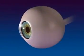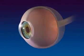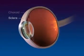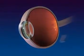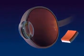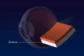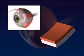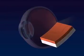The eye has three layers: the sclera, choroid, and retina. The sclera is the outer white layer that maintains the shape of the eye. Muscles attached to the sclera control eye movements. Choroid is the middle layer that contains the blood vessels.